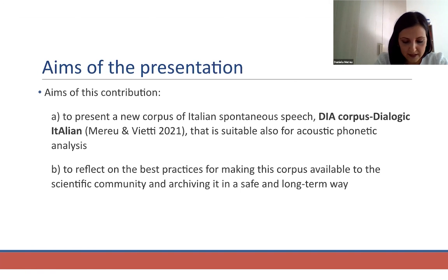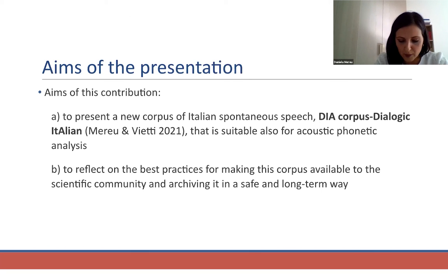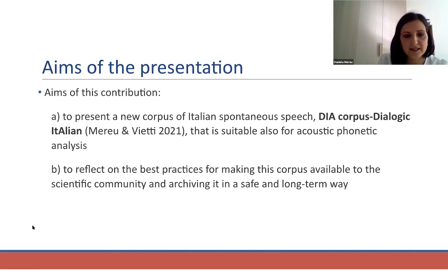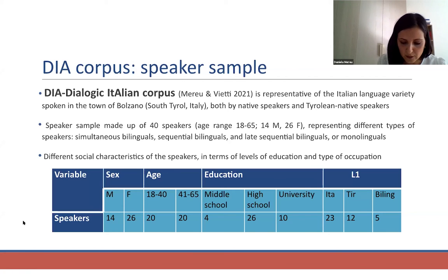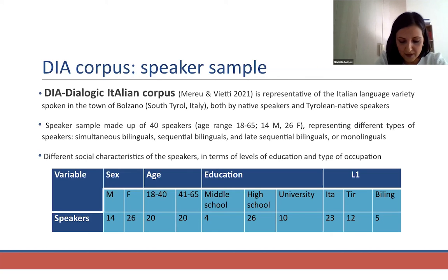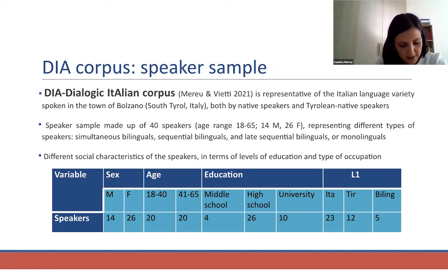The presentation has two goals: to present DIA Corpus, a new corpus of Italian spontaneous speech suitable for acoustic phonetic analysis, and to reflect on best practices for making it available to the scientific community and archiving it safely for the long term. DIA Corpus is representative of Italian spoken in Bolzano, characterized by a bilingual Italian-German community, with 40 speakers representing different language competences and social characteristics.